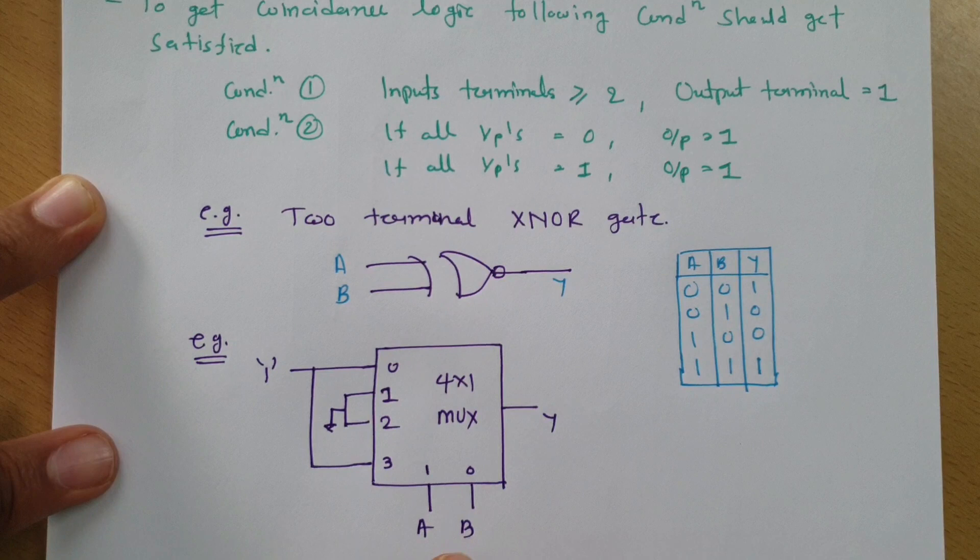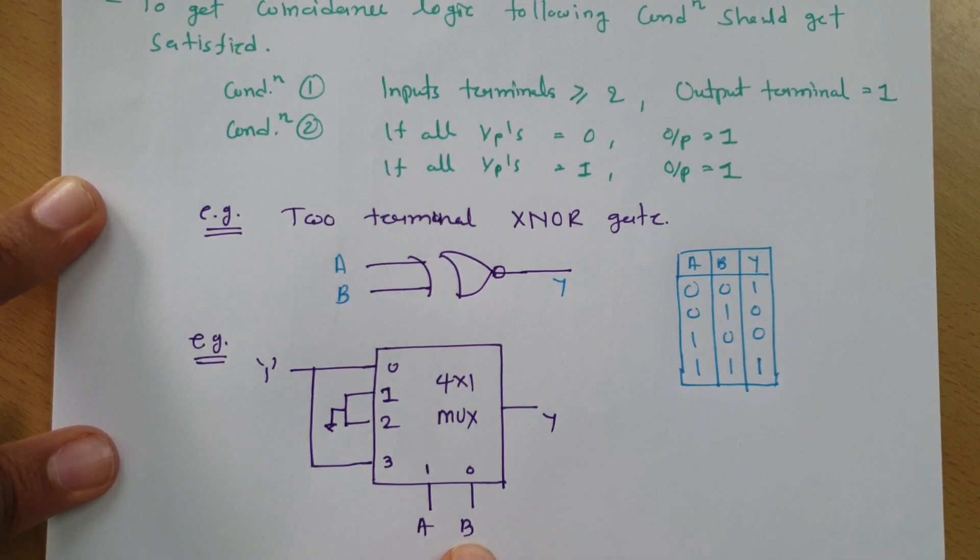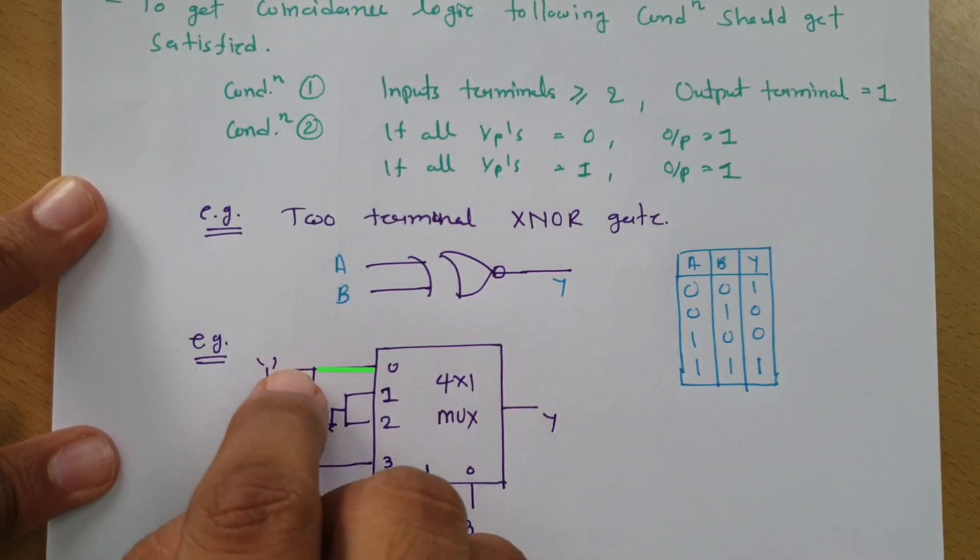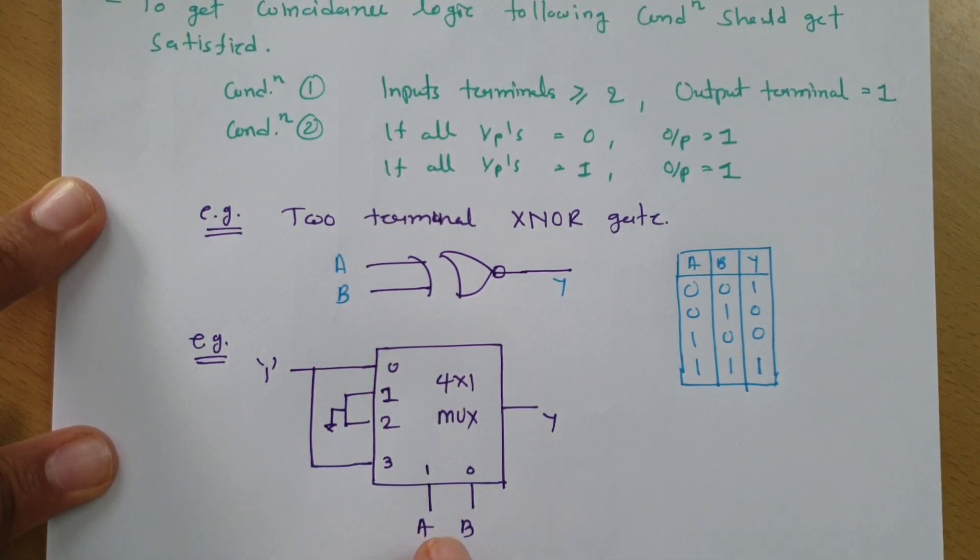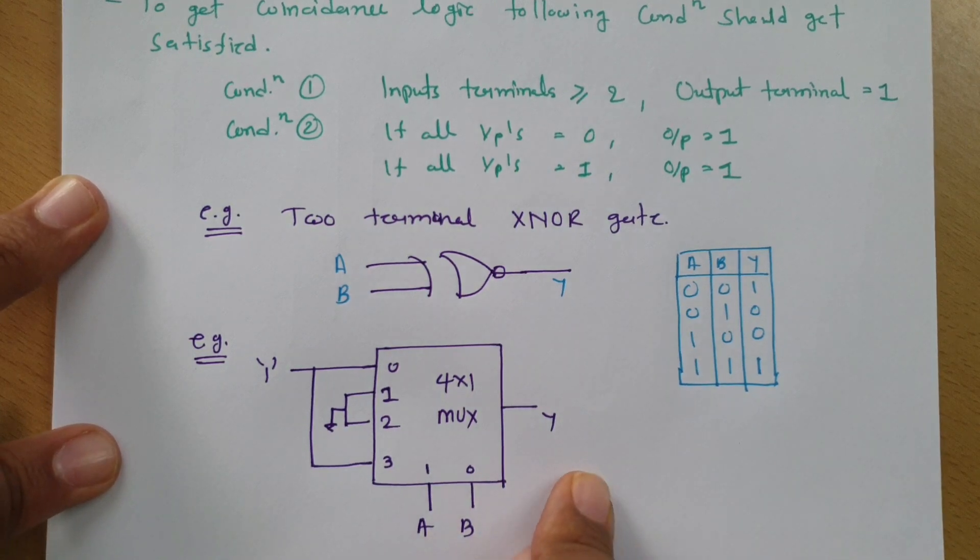For that, we need to see what happens if AB is 0, 0. If AB is 0, 0, the output will be the 0th line, which is one. If AB is 1, 1, the output will be the third line, which is also one. So when both inputs are 0, output is 1, and when both inputs are 1, output is 1. This means this is coincidence logic where there are multiple inputs and a single output.